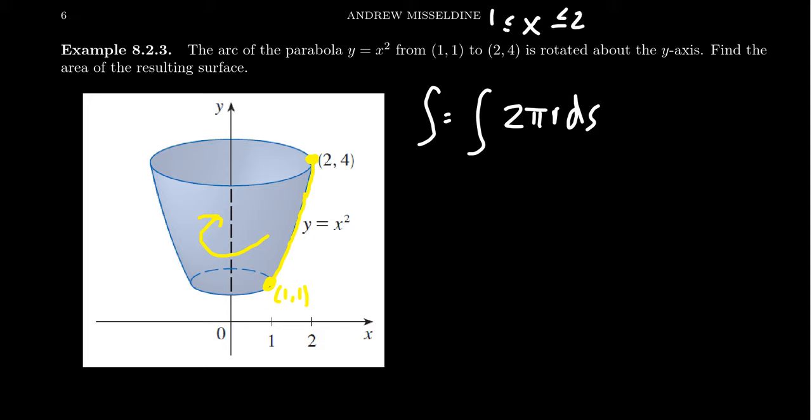But we also see that y will range from 1 to 4 right here. So in terms of the bounds, we can describe the bounds in terms of x or with respect to y. We have that freedom so far. We have the function y equals x squared, but we also have x equals the square root of y.